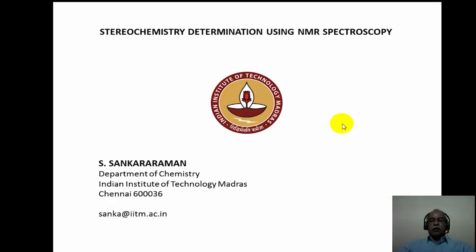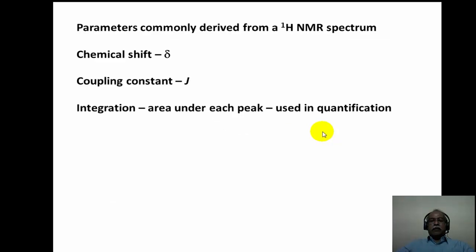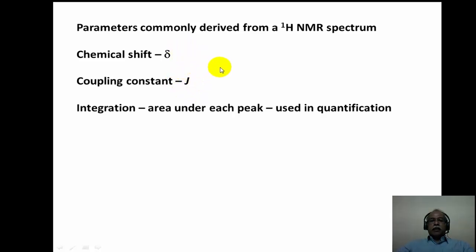In this particular module, we will see how stereochemistry of certain molecules can be determined using the delta values and J values which can be derived from the NMR spectrum. The parameters commonly derived from the NMR spectrum are the chemical shift value (delta value) and the coupling constant value (J value). Both of these parameters can be extremely useful in deciding the stereochemistry of an organic compound.